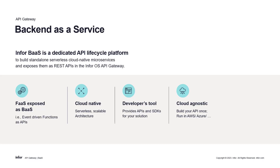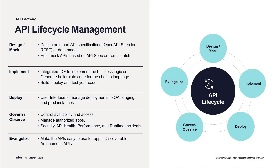This means you can build your API without having to worry about the technical details of managing servers or scaling resources. To effectively manage your API through the lifecycle, InfoBus provides a range of tools and features that allow you to design or import API specifications using OpenAPI spec for REST APIs, host mock APIs for testing and validation, and implement business logic and generate code with an integrated IDE.